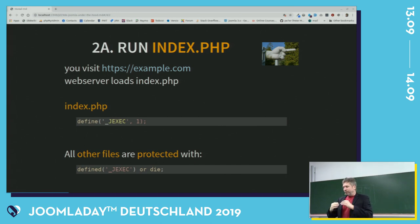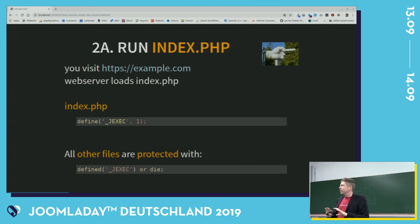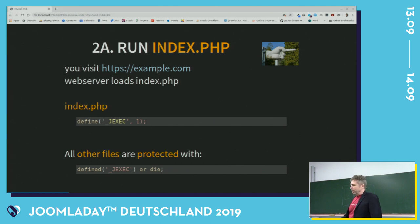All files of Joomla are protected with 'defined JEXEC or die.' So if you go in the browser and open a file that has this, it will die — you can't open it, you can't use it. But if Joomla uses it, because the index is loaded, then you can load all the files. This is the first thing that Joomla does.